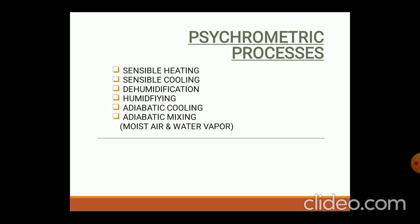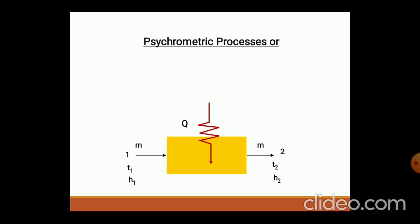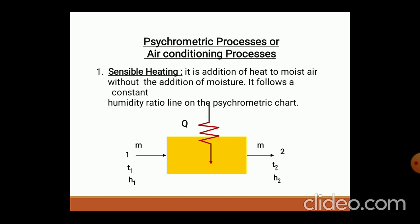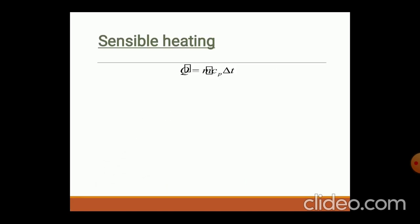The first psychrometric process is sensible heating. What is sensible heating? It is nothing but the addition of heat to the moist air without the addition of moisture. There is no moisture content — only heating. Such type of heating we call sensible heating. On the humidity ratio lines of the psychrometric chart, we can see this process on the sensible heating line.